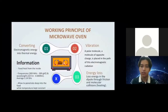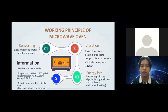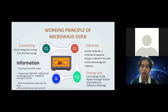Moving on to the working principle of the microwave oven. Microwave ovens work on the principle of converting electromagnetic energy into thermal energy. Electromagnetic energy refers to radiation that consists of an electric field and a magnetic field that vibrate perpendicular to each other. When a polar molecule — a molecule of opposite charge — is placed in the path of this electromagnetic radiation, it vibrates to coordinate with it. This leads to the loss of energy in the dipole through friction and molecular collisions, which leads to heating.